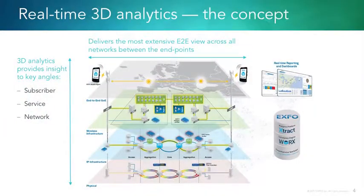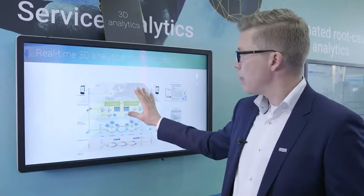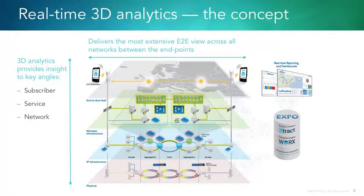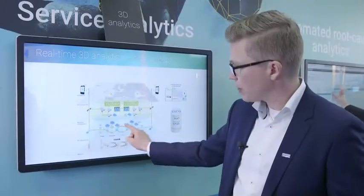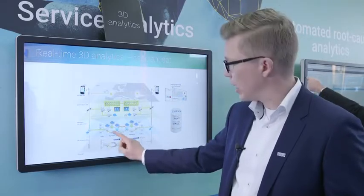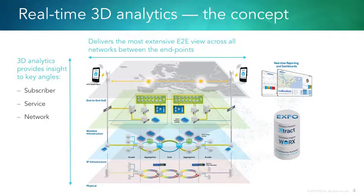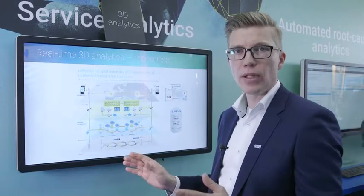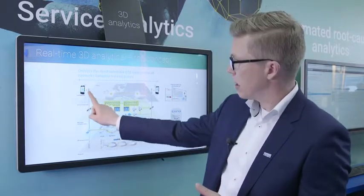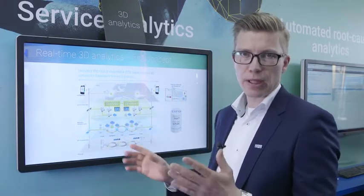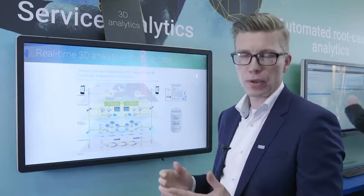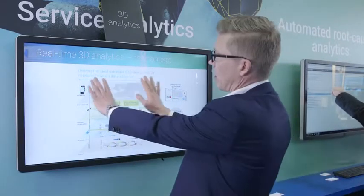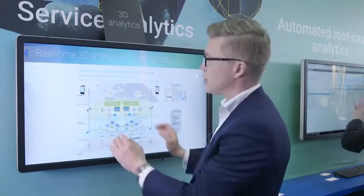Let me start by quickly explaining our positioning in the market. Here you can see an illustration of our network infrastructure. On the top layer we have the user plane data and user level data. We have signaling information, IP infrastructure, and finally the physical network layer. How we position ourselves in this analytics market is that we are building a comprehensive, complete end-to-end view between two devices — in this example, two mobile devices, but it could be fixed devices, computers, or routers. We really aim to cover the whole path and all the networks in between these two devices.